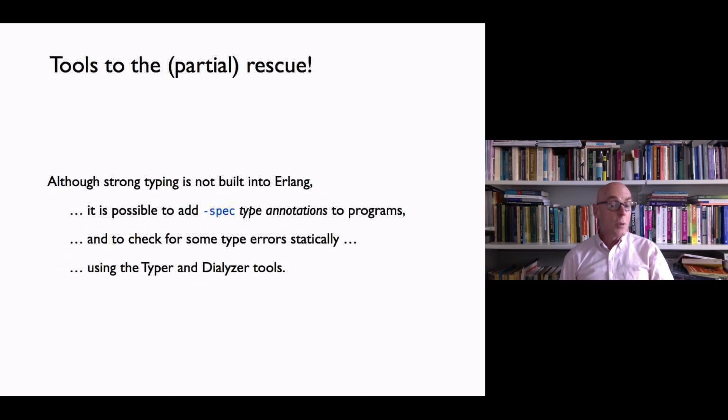And it's possible to check for some type errors statically using the tool Typer, which is built on top of the Dialyser tool, which is to do general correction of Erlang errors. It analyzes for discrepancy errors - discrepancy analyzer is condensed to Dialyser.